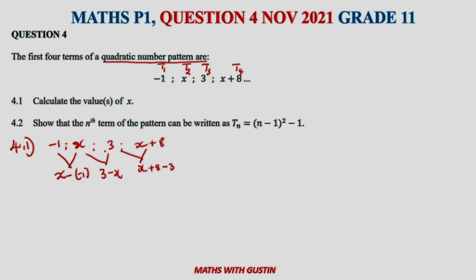Let me simplify and write those first differences correctly. The first differences are: x plus one, then 3 minus x, and then x plus 5, because 8 minus 3 equals 5.